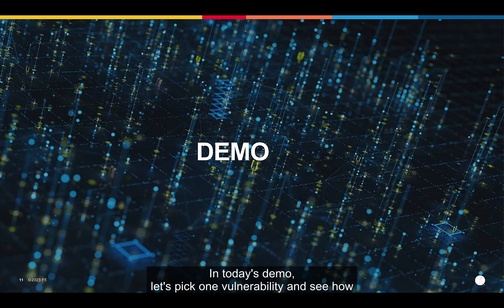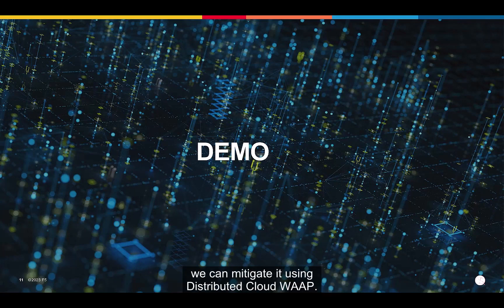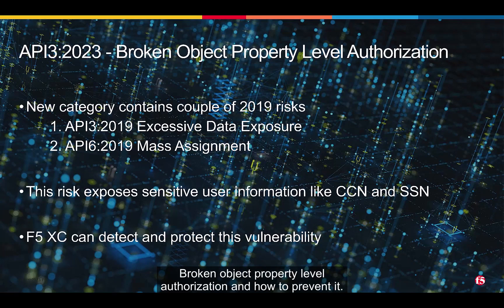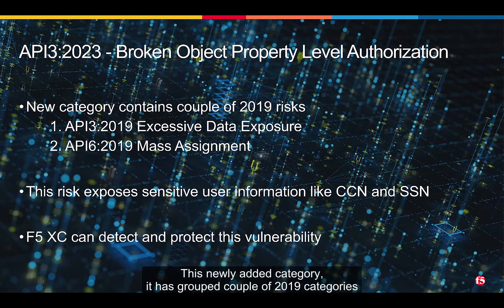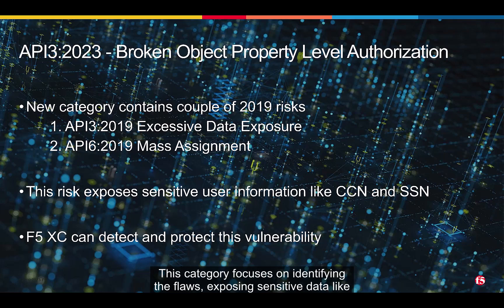In today's demo, let's pick a vulnerability and see how we can mitigate it using distributed cloud. For example, Broken Object Property Level Authorization and how to prevent it. This newly added category has grouped a couple of 2019 categories — excessive data exposure and mass assignment. This category focuses on identifying flaws exposing sensitive data like user information such as credit card numbers and social security numbers.